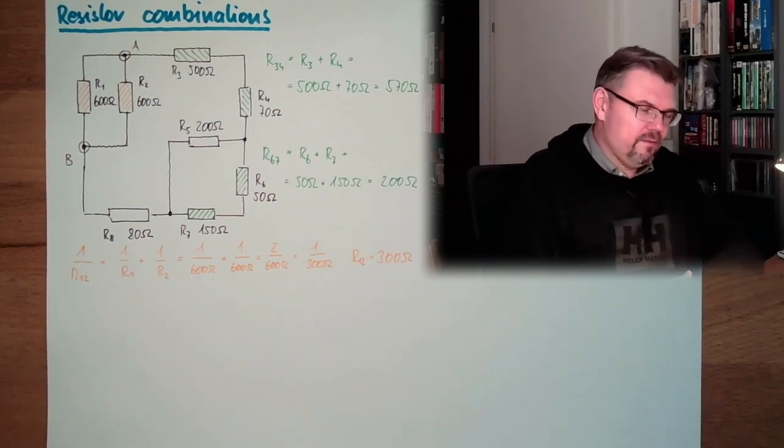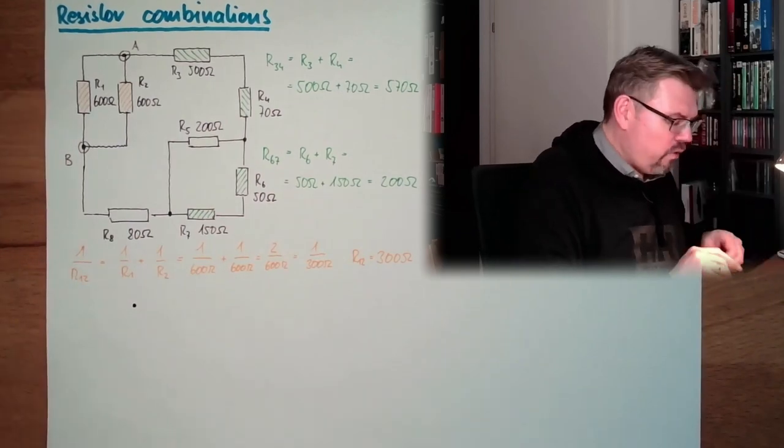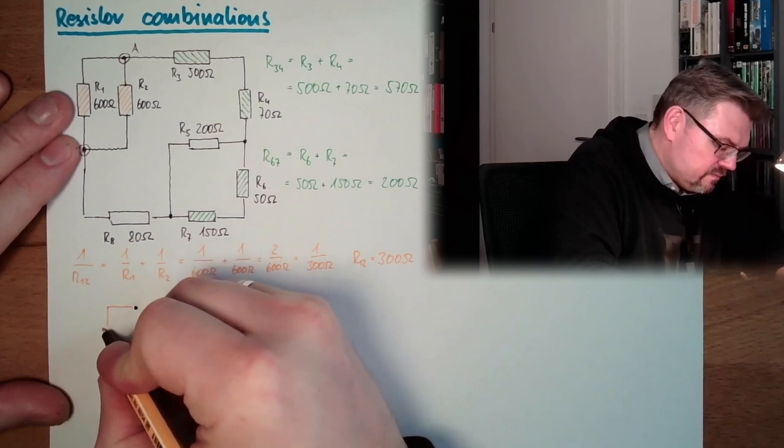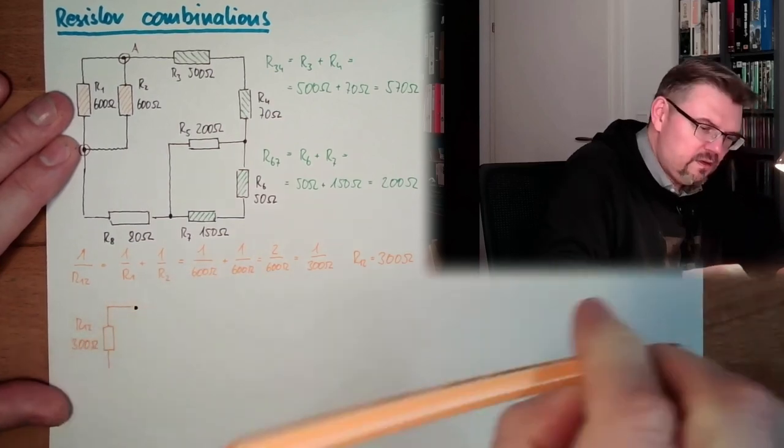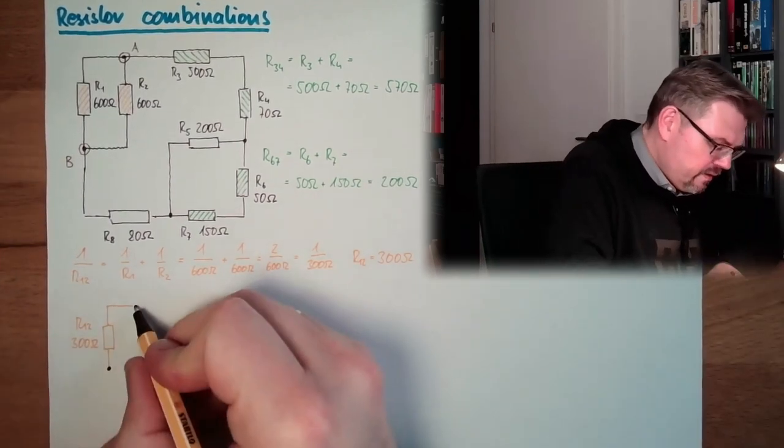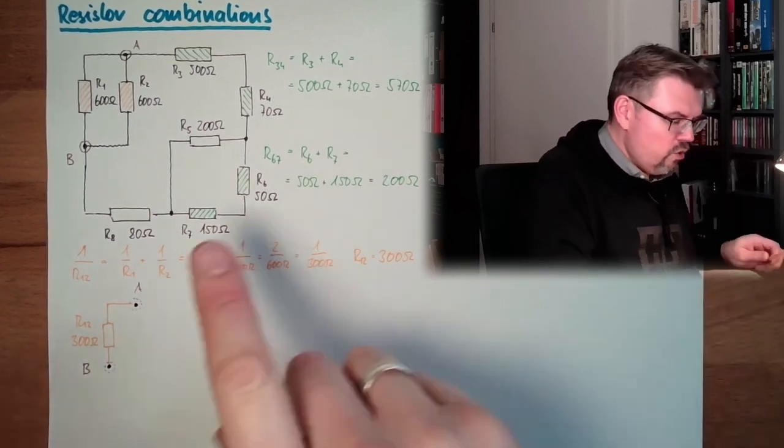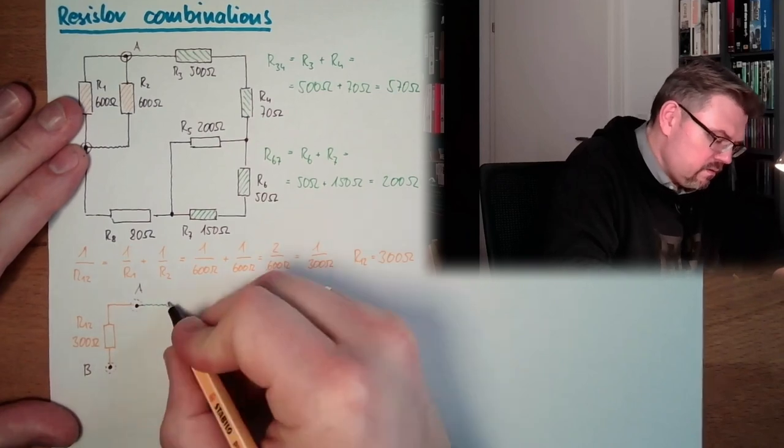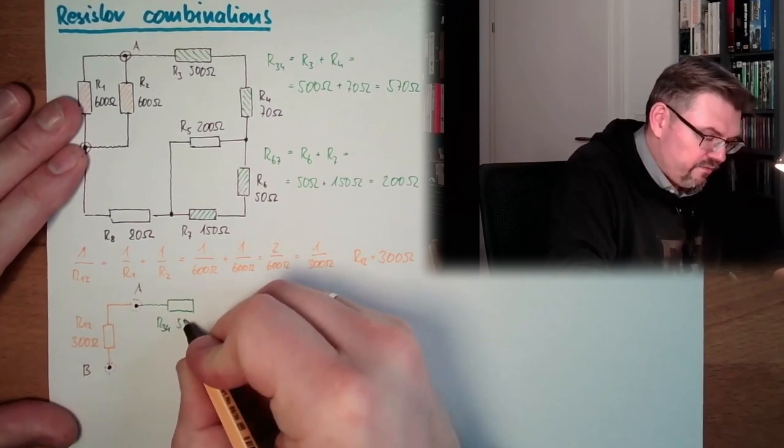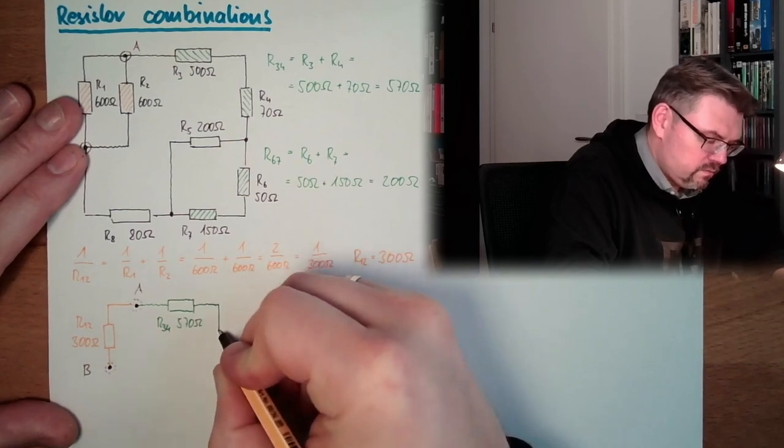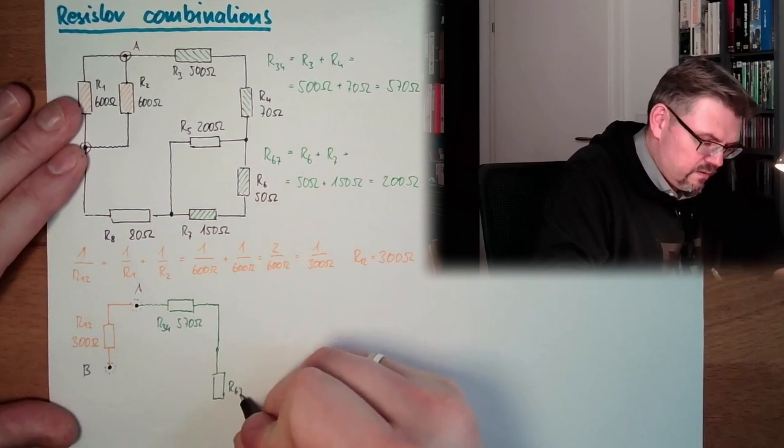And now we are going to draw it again. Okay, so we start here at point A. This is point A. And let's see, here we replace those two with R12. This is the thing we are replacing. So here with this R12, which is 300 ohms. And here we are already at point B. So here we have point A, here we have point B. Here we are going to replace this resistor here with R34, which was 570 ohms.